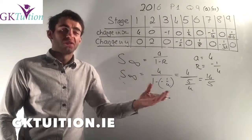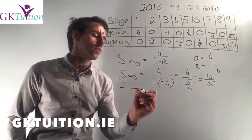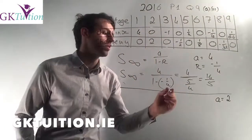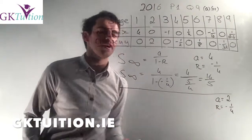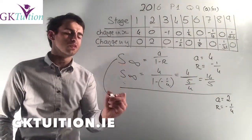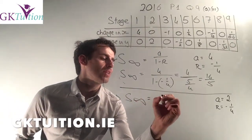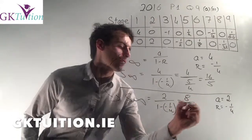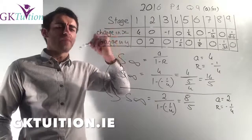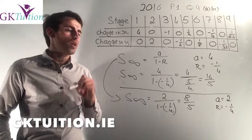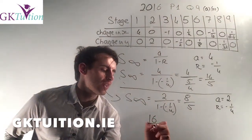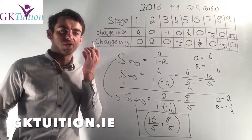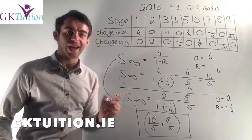Now I want to work out what the y value will be — it's more or less identical. To get my y value, my first term A is equal to 2, and my common ratio is one term divided by the previous term: minus a half divided by 2 gives minus a quarter. So my S_infinity is equal to 2 over 1 minus (minus a quarter), which works out as 8 over 5. So if this pattern goes on indefinitely forever, it's approaching a certain point, and that point is the coordinate (16/5, 8/5). Just make sure you leave your answer as a coordinate because the question said to find the coordinate — it's very common that people find their x and then their y and forget to actually write it as a coordinate.